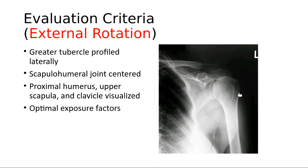On the cheat sheet for week two, the shoulder has an acronym G-E-L-I. The G stands for greater tubercle and E is for external rotation — so the greater tubercle is in profile on the external rotation, found laterally.